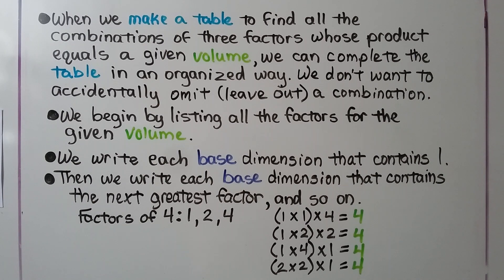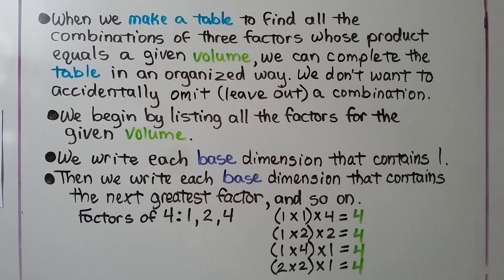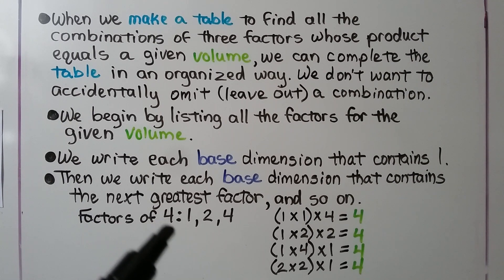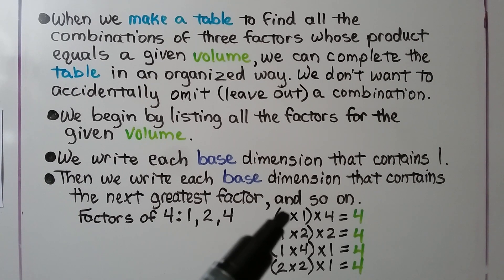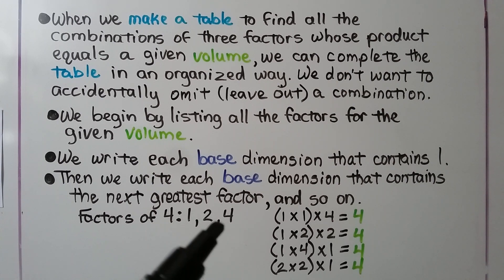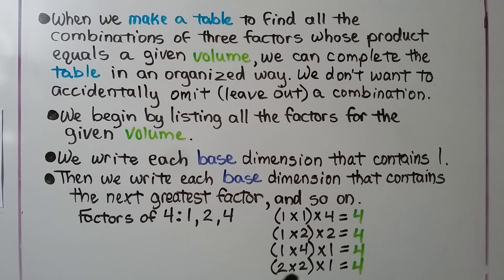When we make a table to find all the combinations of three factors whose product equals a given volume, we complete the table in an organized way. We don't want to accidentally omit a combination. We begin by listing all the factors for the given volume. For example, if our volume was 4, we would start with 1×1 for the base and 4 for the height, then 1×2 base with height 2, then 1×4 base with height 1, and 2×2 with height 1. By listing them in an organized manner, we won't accidentally leave out a combination.